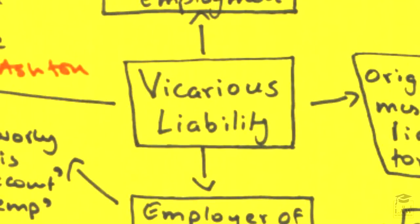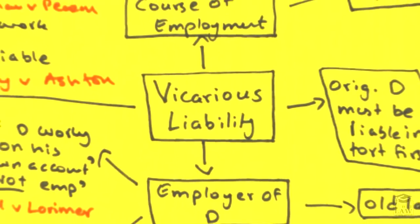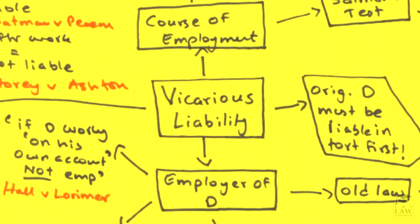In this lesson we are going to look at vicarious liability. This topic is a good example to showcase the versatility of the law of tort and how widespread it is. Vicarious liability deals with the liability imposed on an employer in relation to the acts of a purported employee. We have to determine two primary indicators: one, whether the person who committed the tort is in fact an employee of the defendant, and secondly, whether they did so while in the course of employment.